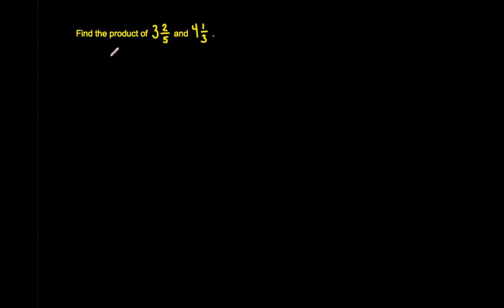So let me rewrite this statement just so we can see what is being asked of us. We have three and two-fifths times four and one-third. Looking at these numbers — three and two-fifths and four and one-third — these are actually mixed numbers. Mixed numbers are numbers that are the sum of a whole number and a fraction.